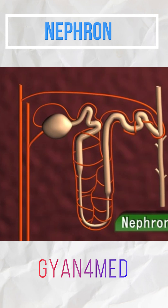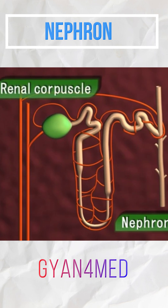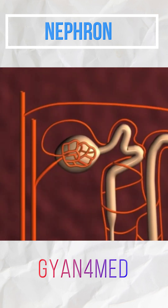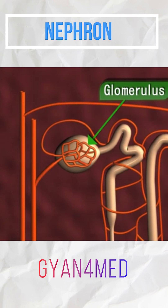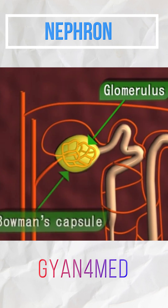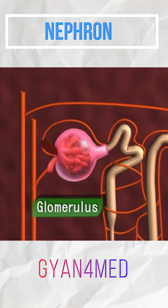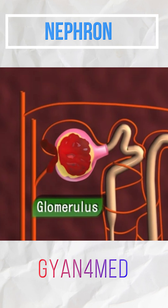Each nephron consists of a renal corpuscle and a renal tubule, a tangled cluster of blood capillaries called the glomerulus, and a thin-walled, sac-like structure called the Bowman's capsule. The glomerulus is actually a miniature filtering or sieving device which consists of a tightly coiled network of capillaries.